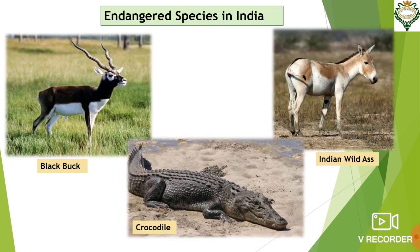Let us see some endangered species that are found in India. Endangered species include species which are in danger of extinction, hence called the endangered species. That means maybe after a few years we cannot find these species — like black buck, crocodile, and Indian wild ass.